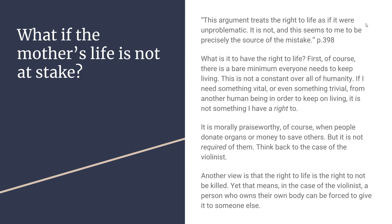First she asks what it is to have the right to life. Of course there's a bare minimum everybody needs to keep living: oxygen, food, water. But it's not constant over all humanity — there are people who are sick that need insulin or kidney dialysis, medication, or care if they happen to be disabled. Jarvis Thompson says if I need something from someone else in order to continue living, it's not something I have a right to — it'd be nice if they gave it to me, but I don't have a right to it. You can think of this as needing a new kidney: I might need it to keep living, but I have no right to find a matching donor and force them to give me one of their kidneys.